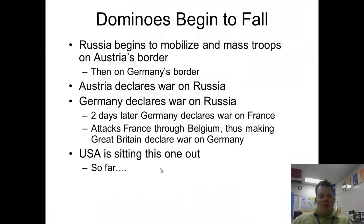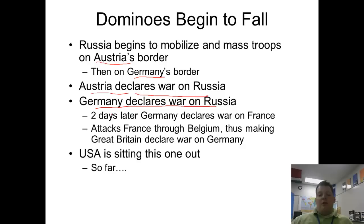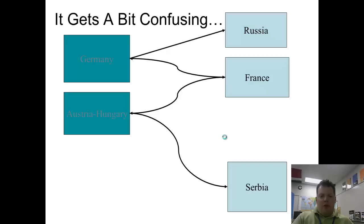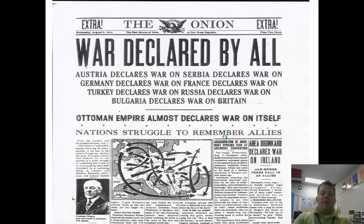Here's where the dominoes begin to fall. Russia is allied to Serbia, and once Austria starts threatening Serbia, Russia comes to Serbia's aid and threatens Austria. Germany then comes to Austria's aid and threatens Russia. Austria declares war on Russia, Germany declares war on Russia, France gets pulled in, Germany declares war on France, Germany invades France through Belgium, Great Britain — allied to Belgium — declares war on Germany. First Austria-Hungary declares war on Serbia, then Germany declares war on Russia, Germany declares war on France, France declares war on Austria-Hungary, England declares war on Germany then Austria-Hungary, and the Ottoman Empire declares war on everyone. It gets a little confusing.